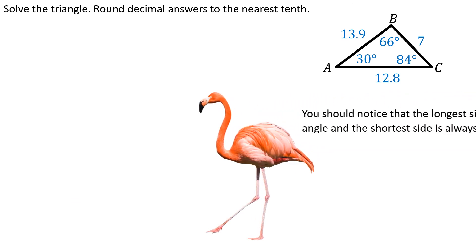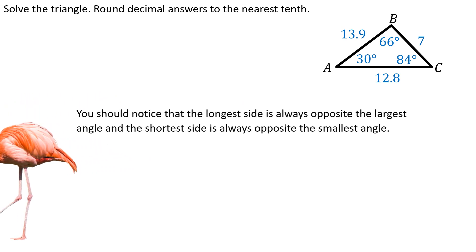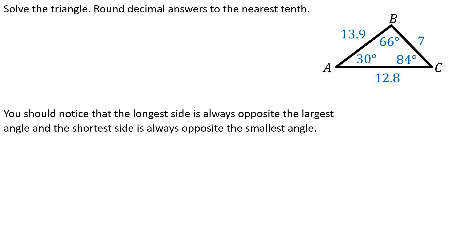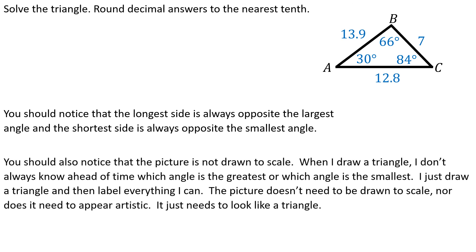Okay. The picture, again, we're not going for artistic perfection. You might notice that the picture looks kind of weird. You say, hey, shouldn't 84 degrees, shouldn't that angle look bigger than the one that has 66 degrees? Or, hey, you know, the side that's labeled 13.9, shouldn't that look larger than the side that's labeled 12.8? Right? Your picture does not have to be artistic. It does not have to be mathematically correct. It's not going to be drawn to scale. It's not going to be in the correct proportion. Don't worry if that side that says 13.9 doesn't look like it's much longer than the side that's labeled 7. Don't worry about it. Right? It's not going to look correct. Don't worry about it. As long as it's a triangle and as long as you can label A, B, and C, and then put the numbers in the correct locations, it's going to be just fine.